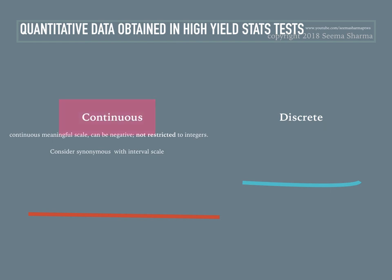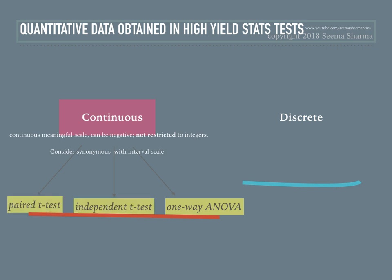The three tests for which we obtain continuous data are one-way ANOVA, independent t-test, and paired t-test. All three tests have one interval variable, which is the dependent variable, and one nominal variable.